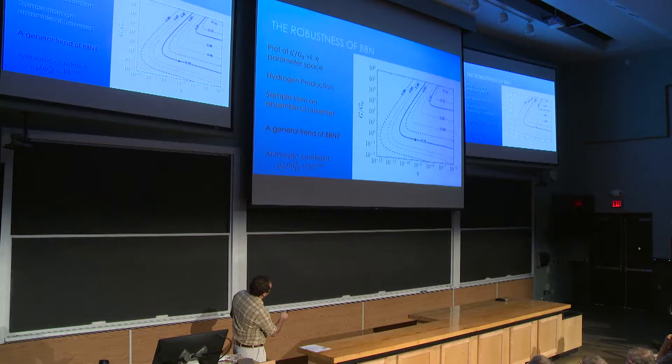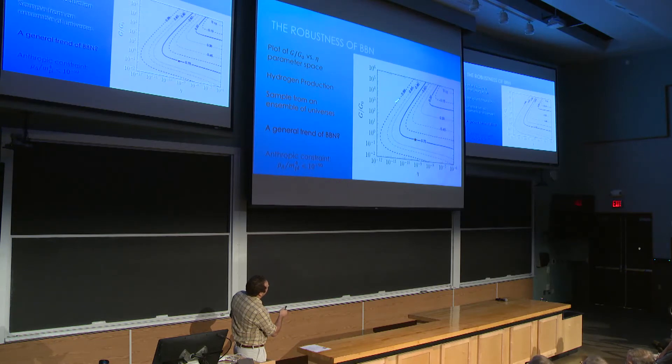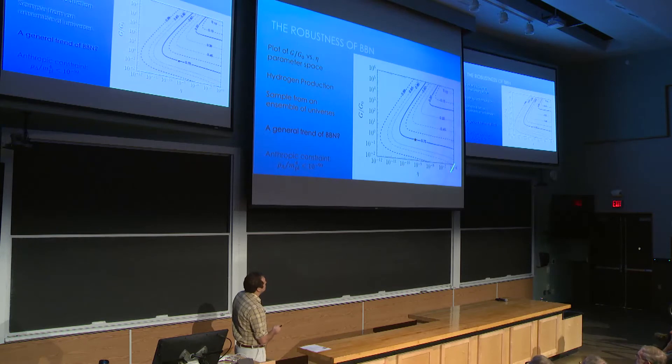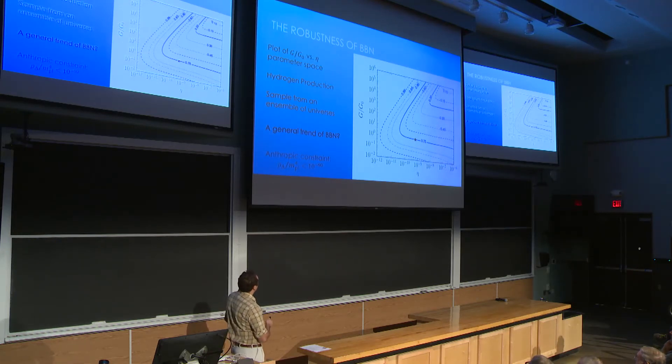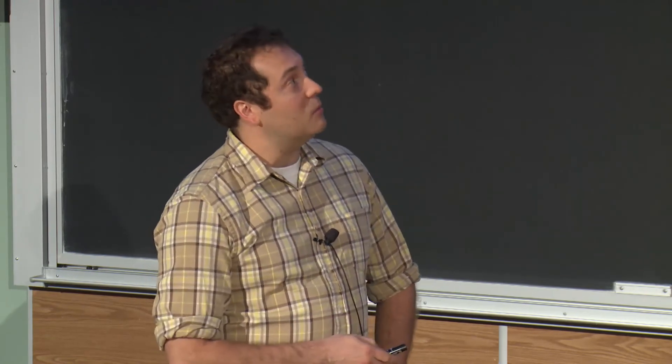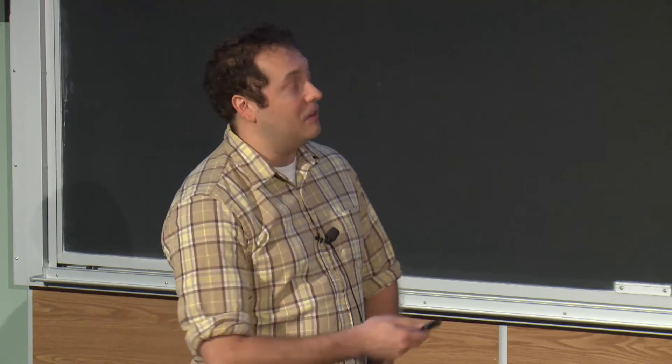If you change eta, the baryon-to-photon ratio, and if you change the Planck mass, you're changing gravity. And so that's going to change BBN. And so this other contour plot shows the contour space of all these different universes with different gravitational strengths and different baryon content. Now as you can see, 10 to the minus 12, 10 to the minus 6, that's 6 orders of magnitude, and then minus 2 up to 6, 8 orders of magnitude. This is a huge contour space. But these contours of hydrogen go from about 100% down to 10%. That's not much change. So basically, when you change these two things over a vast amount of area, you're actually not getting much change at all in the amount of hydrogen.